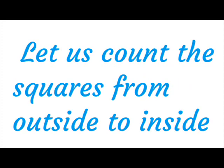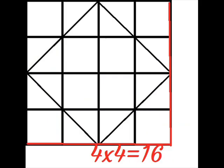Let us count the squares from outside to inside. In the outer border of the square grid, there are 4 by 4 squares. So totally 16 squares.